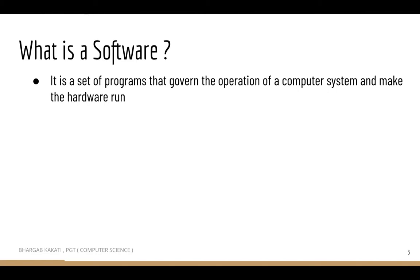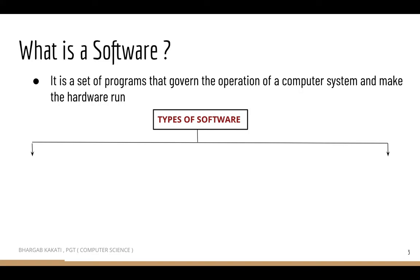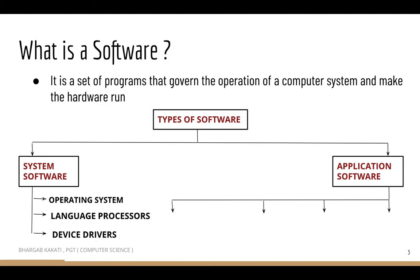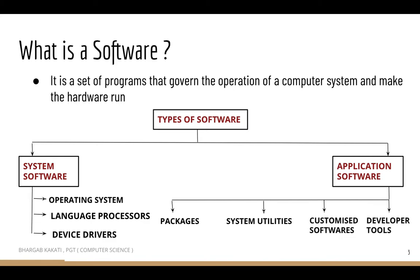Software is a set of programs which will help you in running the computer. There are different types of softwares, basically classified into two categories: system software and application software. System software can further be classified into three categories — operating system, language processors, and device drivers. Application softwares are classified into four categories — packages, system utilities, customized softwares, and developer tools.